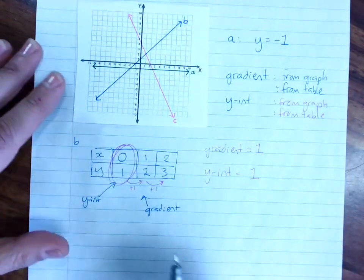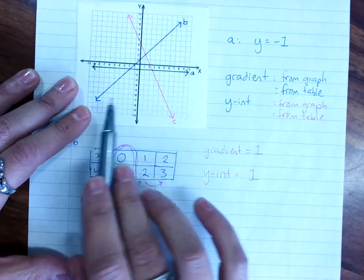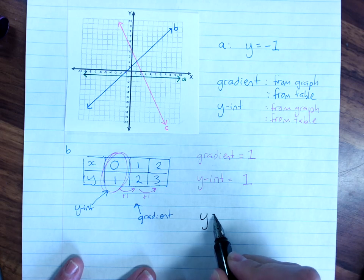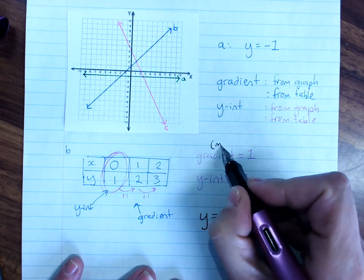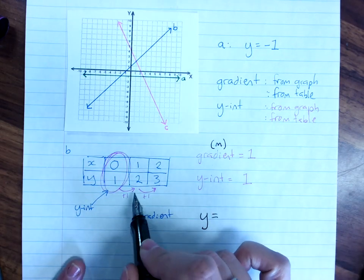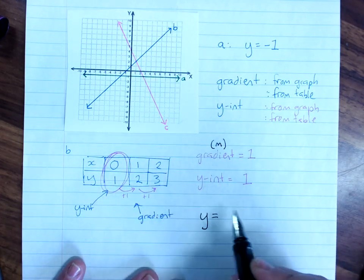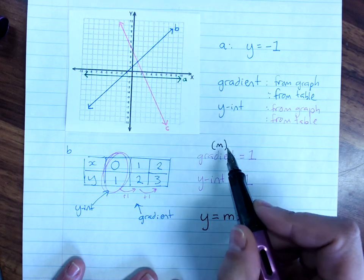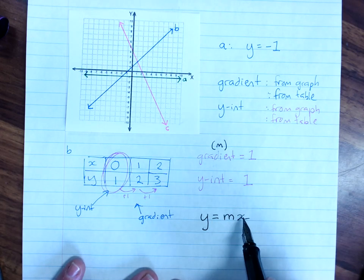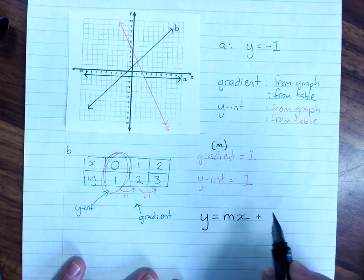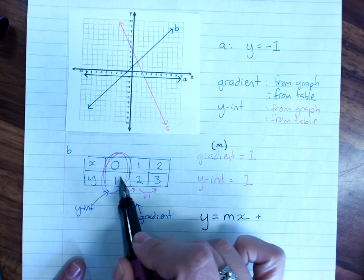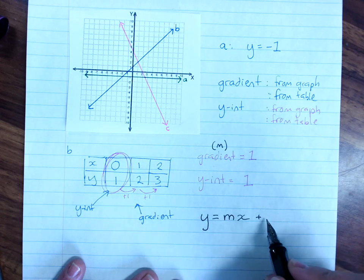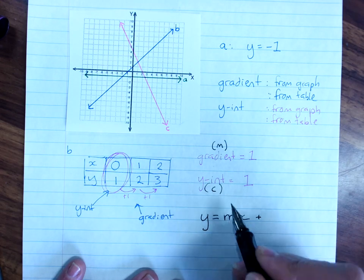And the trick with any line is that any line will be y equals... Now, we use m for the gradient. And you know very well that the pattern in y is the number in front of the x, the coefficient of x. mx says you put the gradient as the coefficient of x. And you also know that when x is 0, the number here on its own, the number here for y, ends up added or subtracted onto the end of the line. And we'll call the y-intercept c, just because that's what the rule is.